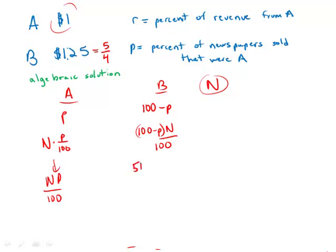So what we get is 5N times 100 minus P over 400. Then we have to add these two. So I'm going to multiply the numerator and denominator of this one by 4 to get a common denominator, and then add them together. And what we get is 4NP plus 500N minus 5NP all over 400.